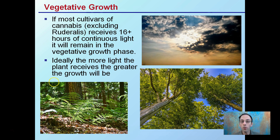Vegetative growth of cannabis, excluding root issues, if it receives 16 plus hours of continuous light, it'll remain in the vegetative growth phase. Ideally, the more light the plant receives, the greater the growth will be — to some extent, because there can be burning that occurs.